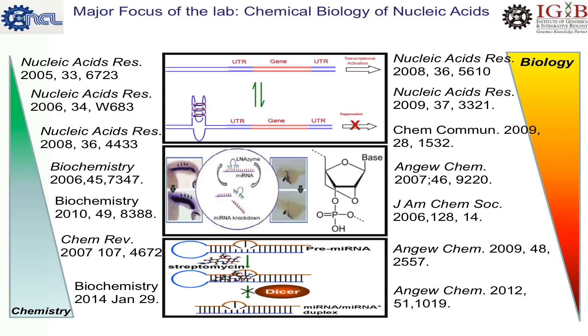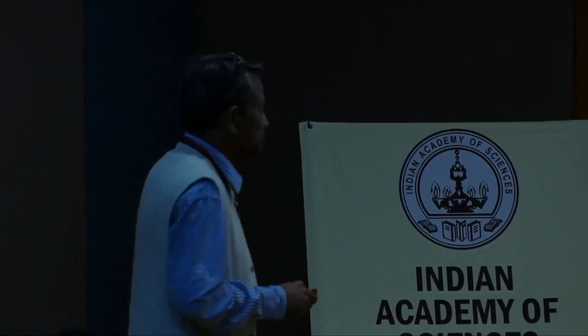We work at IGI, the Institute of Genomics and Integrative Biology, at the interface of chemistry and biology, taking nucleic acid as a thematic area. We try to understand the formation of different kinds of unusual structures — the usual structure is duplex. We are interested in non-duplex structures: how they form in the test tube, their thermodynamical understanding, as well as inside the living cell. Once confirmed they exist inside the cell, we try to understand whether they manipulate some biological function, or whether small molecules can target them specifically to interfere with biological function controlled by unusual DNA or RNA structures.